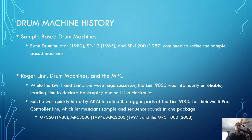Other sample-based drum machines to be aware of are the EMU Drumulator from 1982, their SP-12 from 1985, and their SP-1200 from 1987, which continued to refine sample-based drum machines. EMU is very famous for their Emulator, an early sampler device where you could record the sound of anything from a microphone and play it out over a keyboard. They applied the same technology to their drum machines, just using predefined samples.